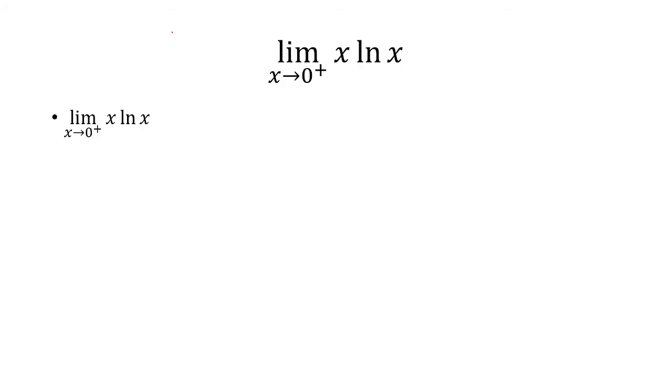Notice that ln of x looks something like this. As x approaches 0 from the right, we're going towards negative infinity. So right now we have 0 times negative infinity.